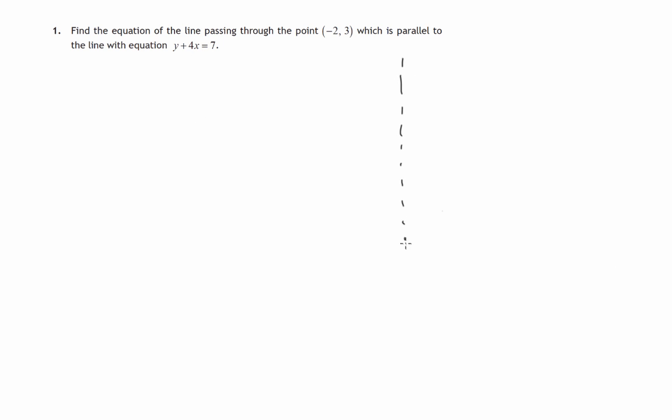Now, a little reminder. If we know a line passes through a point (a,b) and it has gradient m, its equation is y minus b equals m times x minus a. So that's the formula we will use.